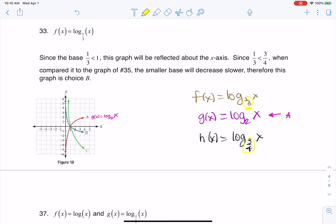So when we try and pair these up, whenever you have the smaller base, the smaller base is going to decrease slower.